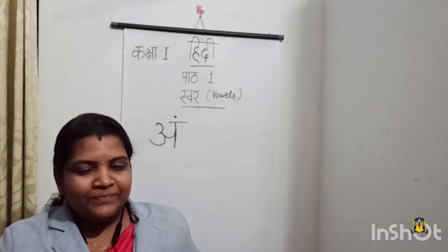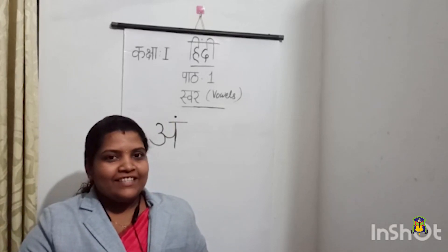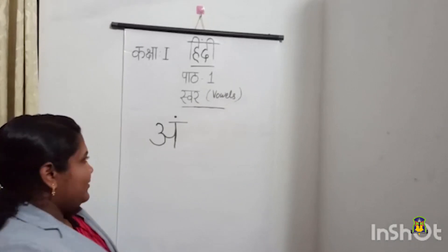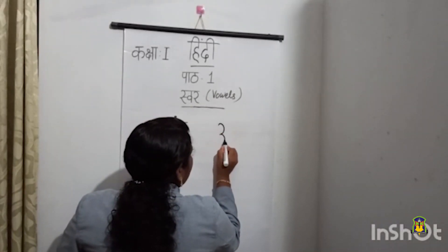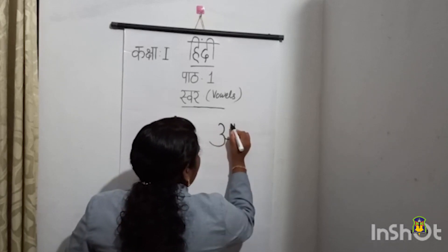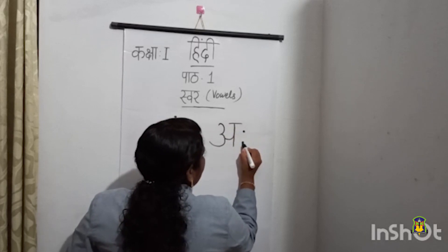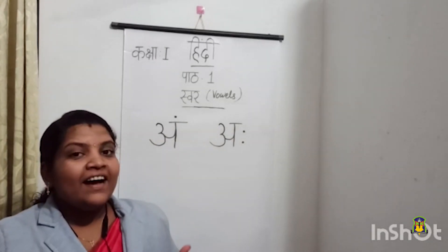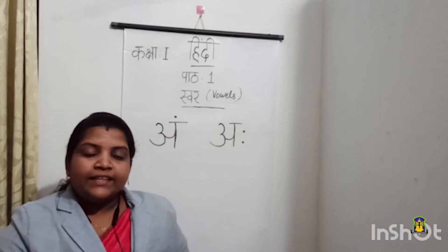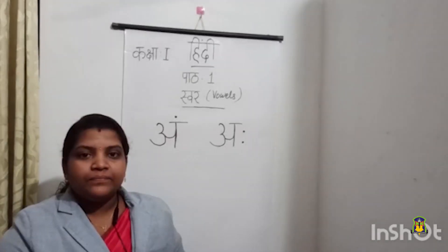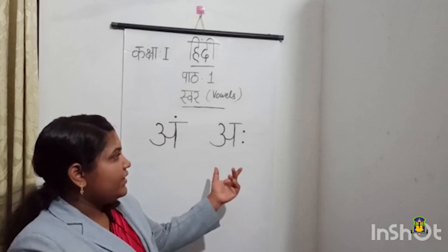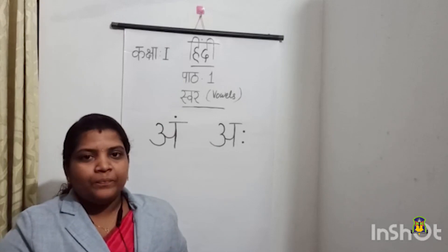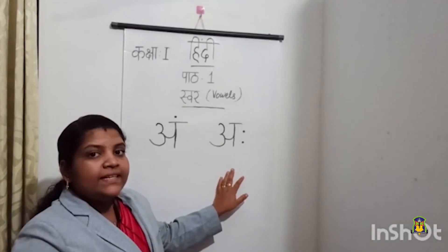So can we move on to the next letter? Next we are going to study the last letter of Svaraksha. Let me write the letter first. This letter is A. There are no words starting with letter A. Instead of this letter we will use only the symbol.